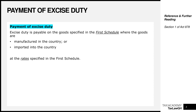Whereas VAT applies to everything unless that thing is clearly listed on the First Schedule as being exempt, excise duty is the opposite. Excise duty is payable on the goods specified in the First Schedule, where those goods are either manufactured in Ghana or imported into Ghana, and the First Schedule gives the rates. Unlike VAT, excise duty applies only to a specified list — if you are not on that list, excise duty does not apply to you.